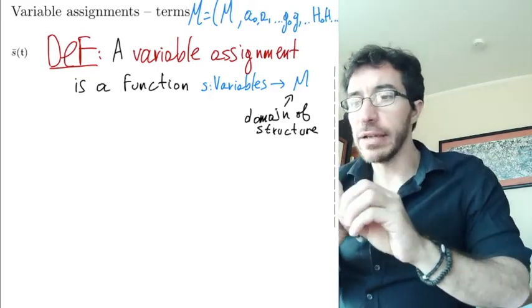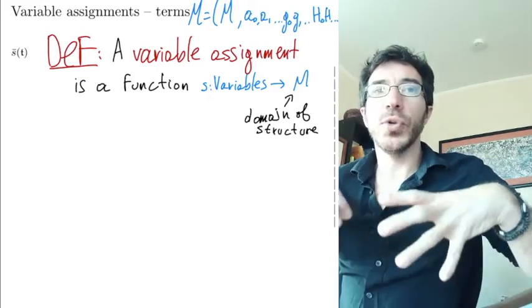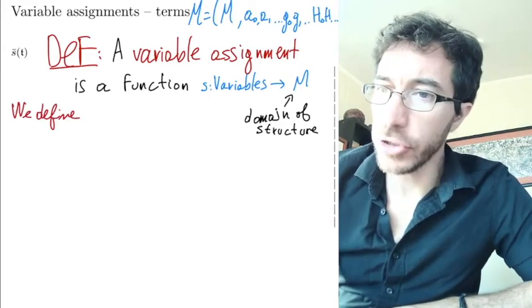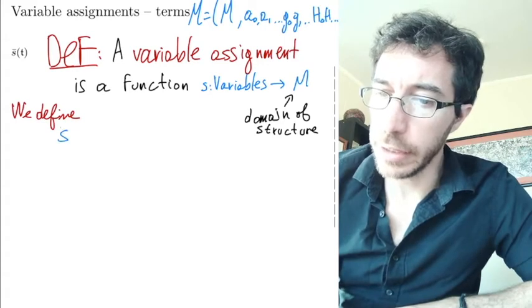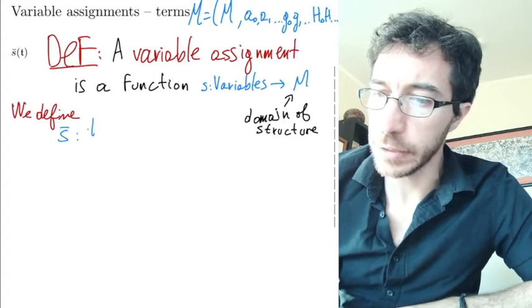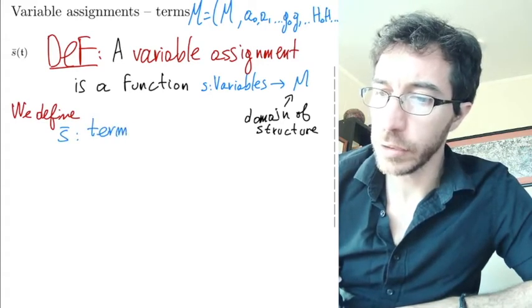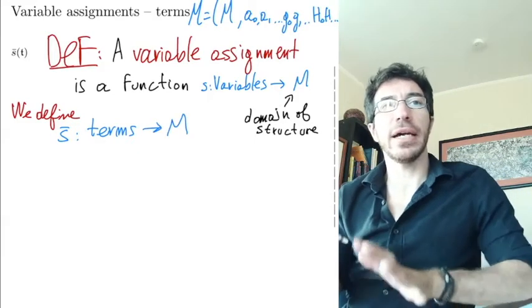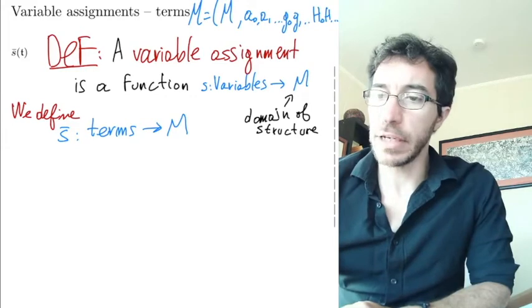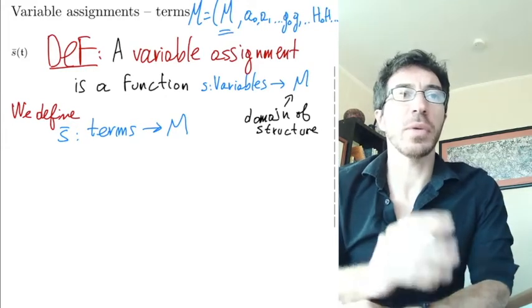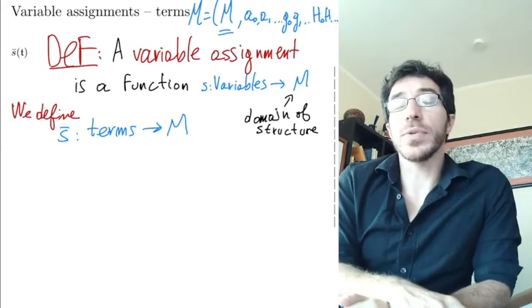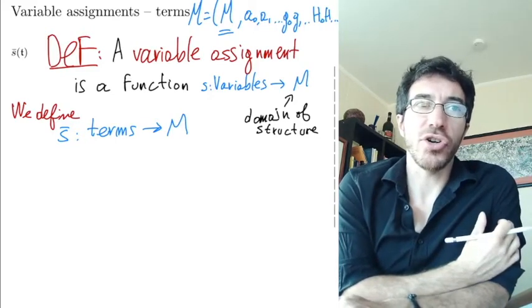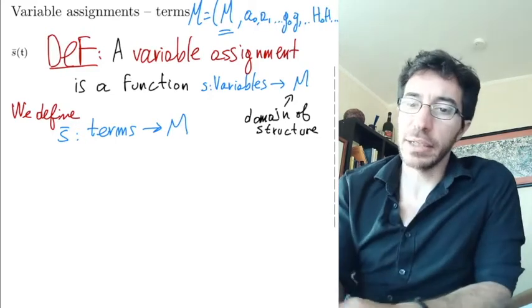Okay, so we want an extension s bar that now goes from the set of all terms to M. Okay, so M is again our universe, is our set of elements that we have. That's where we take the elements from. So once we know how to assign the variables, now we should be able to assign all terms. And again, we do it by recursion.